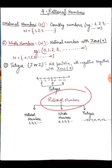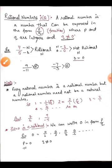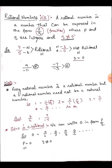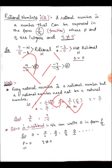Rational numbers totally depend on natural numbers, whole numbers, and integers. Without natural, whole, and integer number systems, we cannot define the rational number. A rational number is a special type of number that can be expressed in the form p upon q — that is, fraction form. Here p is the numerator and q is the denominator, and the line between them is called the fraction bar.